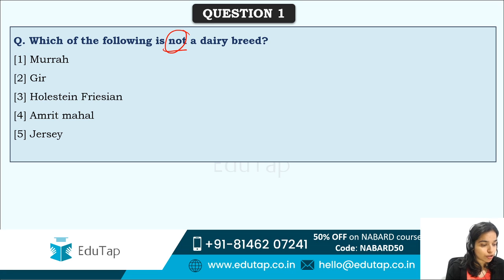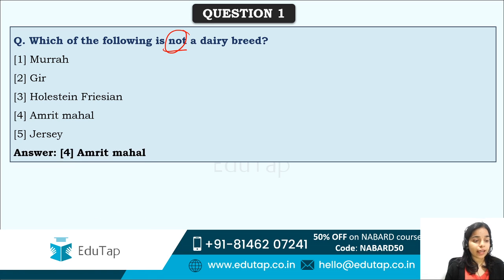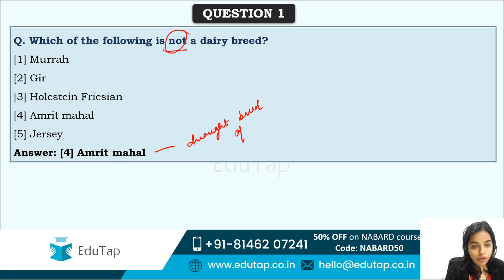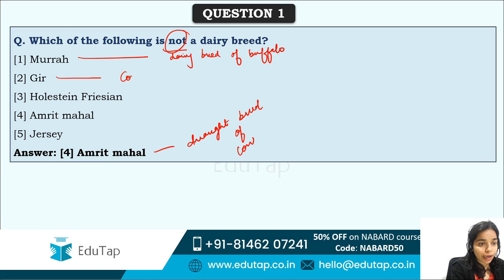Most of you are saying option four, Amrit Mahal, and that is the correct answer. Amrit Mahal is not a dairy breed — it is actually a drought breed of cow. Murra is a dairy breed but it's a dairy breed of buffalo. Gir is a breed of cow and it's a dairy breed.